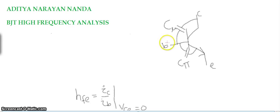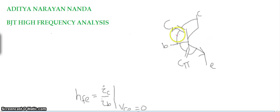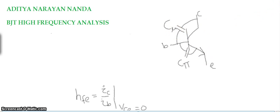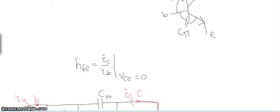Hello everyone. Today we will learn about the BJT high frequency analysis. At high frequency, the base-collector parasitic capacitance cμ and the base-emitter parasitic capacitance cπ dominate, and their effect is visible at high frequency.